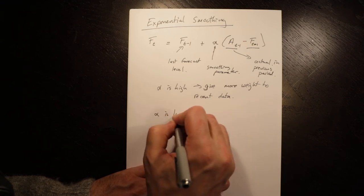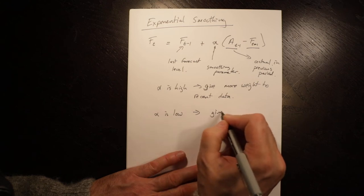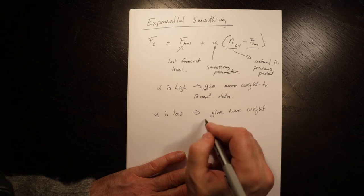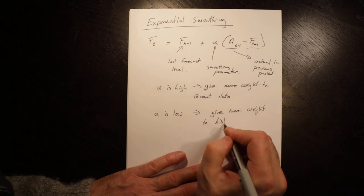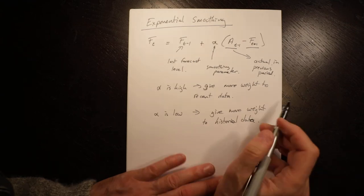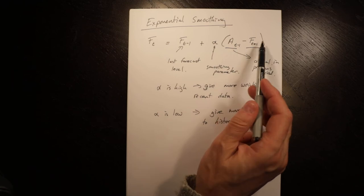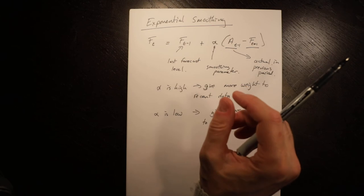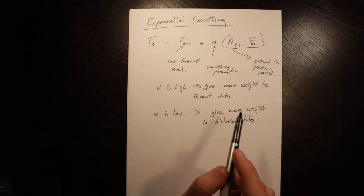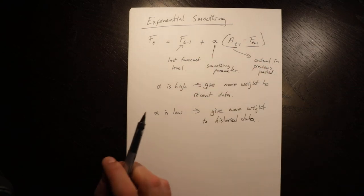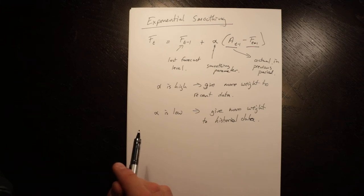If alpha is low, you give more weight to historical data. So if alpha is equal to one, you would say the amount I missed by last time I'm going to add to this, so I'm going to really respond to that difference between the two in the last period. And if alpha is low, I'm not going to respond to that actual much at all, I'm going to respond to it just a little bit.